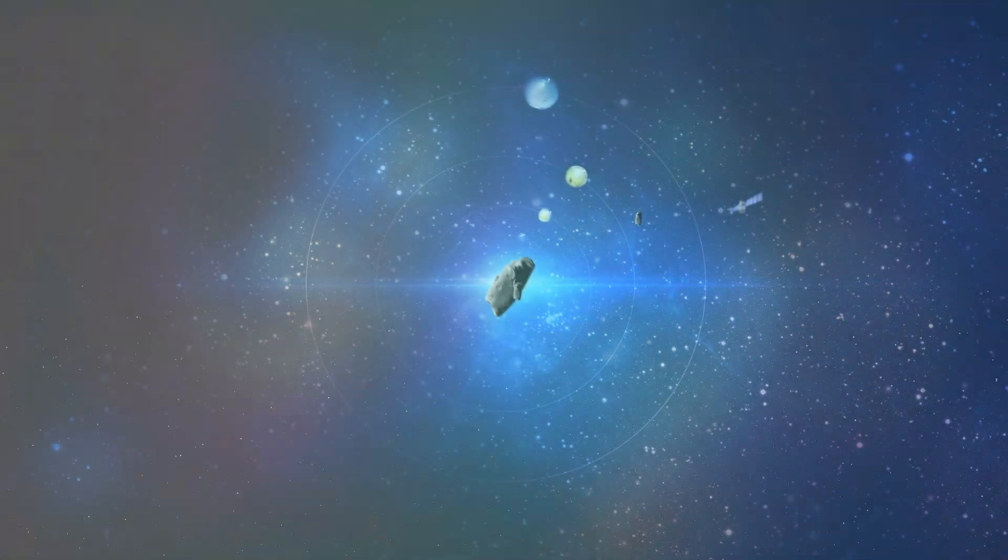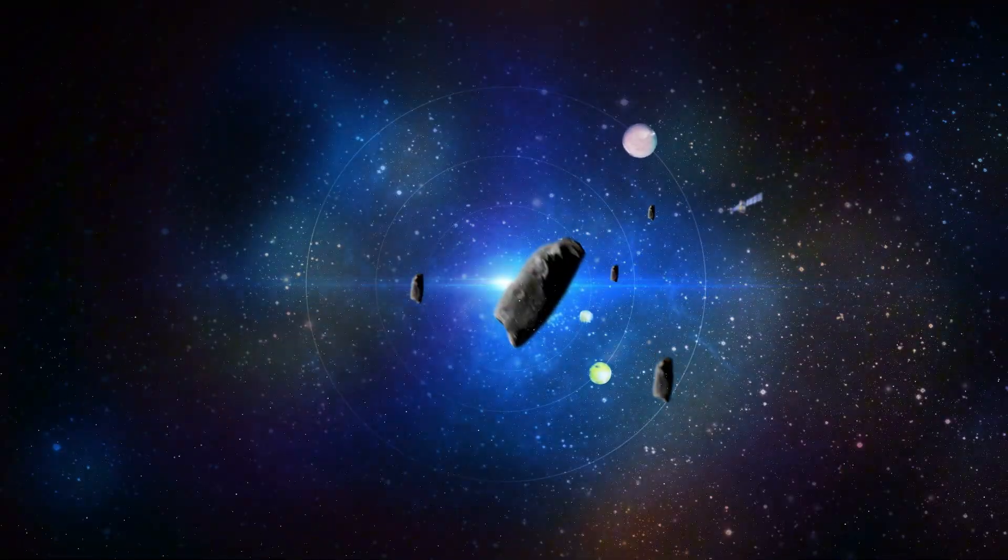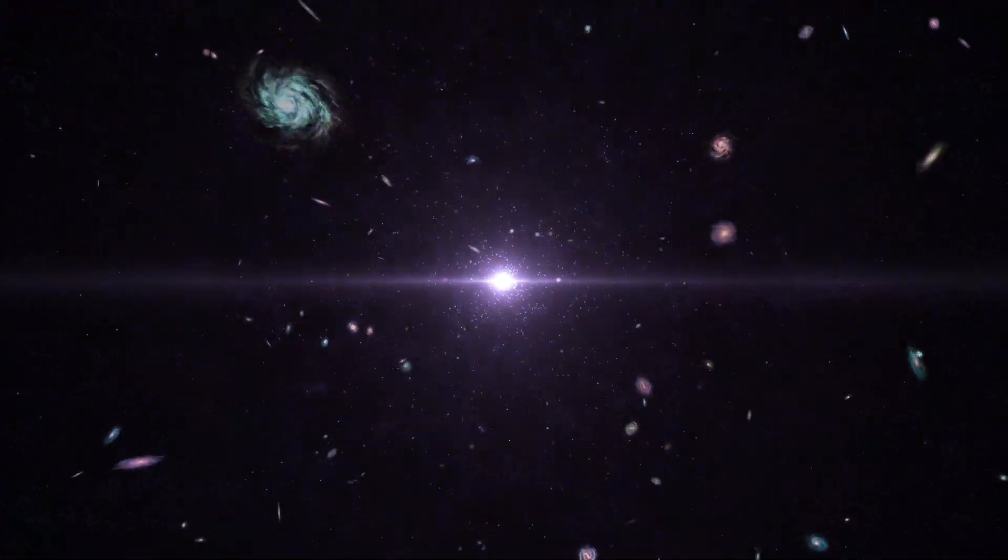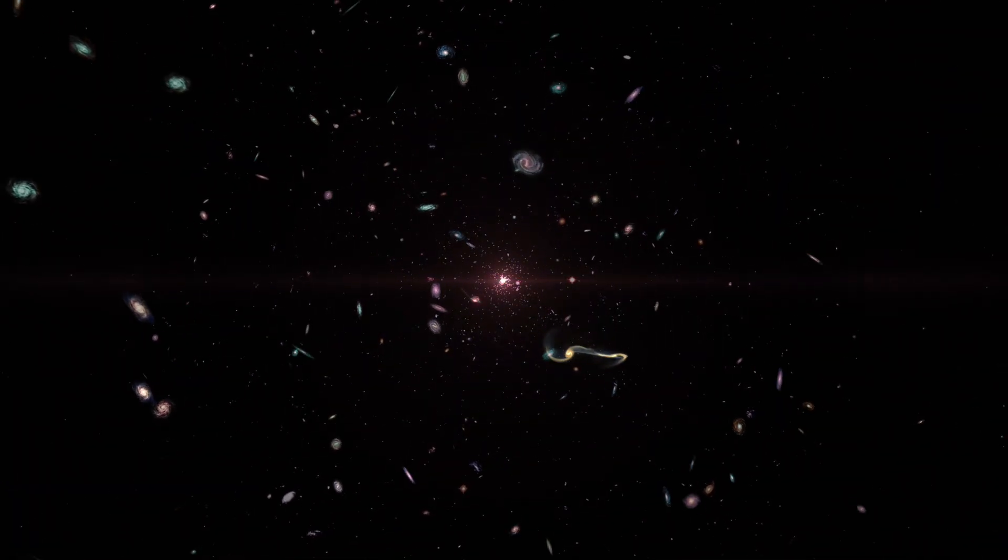So next time you hear someone say Earth is just a rock in space, think again. Our place in the solar system is anything but random. It's the result of a billion tiny chances lining up perfectly. If we had formed just a little too close or too far, we wouldn't be here.